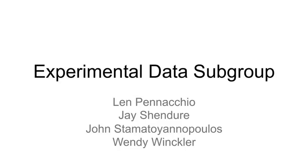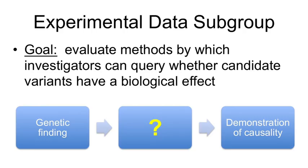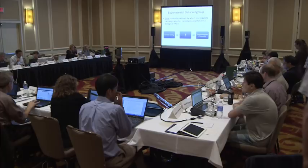We've had good discussion this morning already about how to design and analyze genetic studies and how to use computational methods to annotate and prioritize variants. Our group was charged with how to take the next step—how to apply experimental methods to identify ways investigators can test whether their candidate variant might have a biological effect, and what are the considerations for implementing these types of methods.